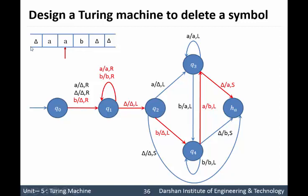Finally we have our string A, A, B and we have successfully deleted B from the string. The logic is very simple: replace the symbol you want to delete by delta, then keep moving to the right direction until you find the rightmost end of the string. From the rightmost end, shift each and every symbol one step to the left side. This is a very simple Turing machine. I hope it is clear. Thank you.